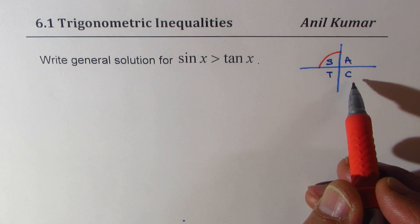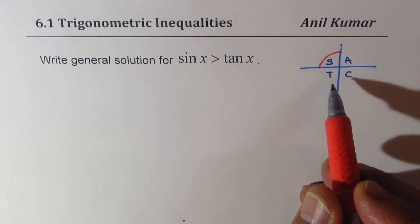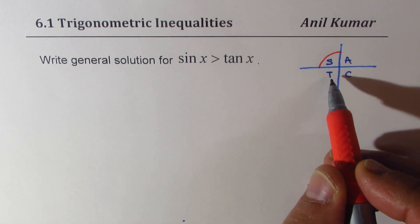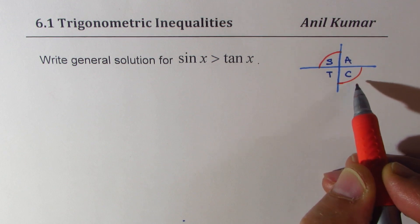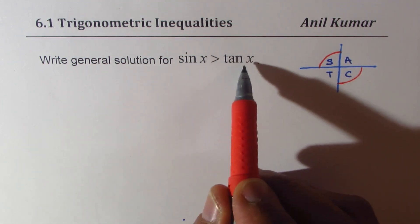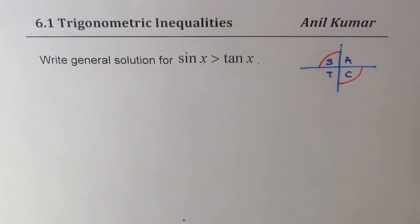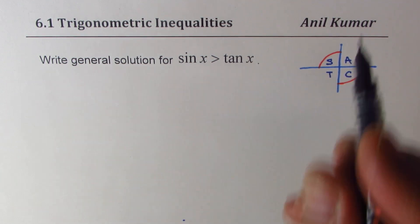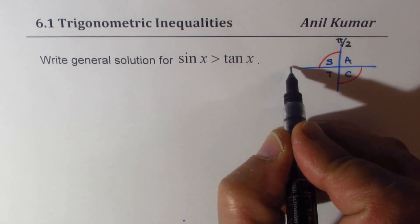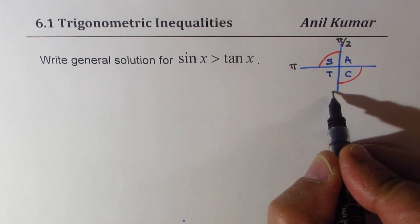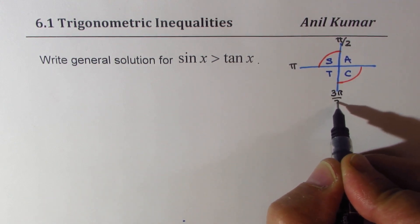Now in quadrant C, both sine and tan are negative. However, tan is more negative. So in this quadrant also, sine has to be greater than tan x. So clearly, we do get a solution which is from pi by 2 to pi and then from 3 pi by 2 to 2 pi.